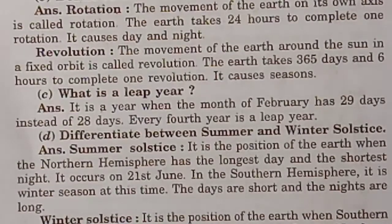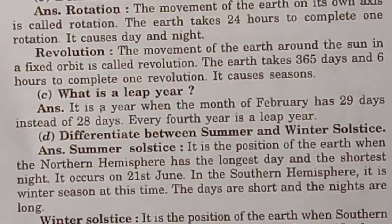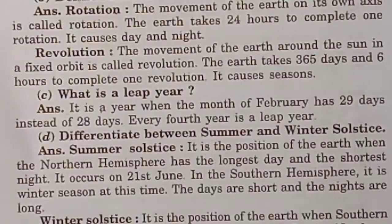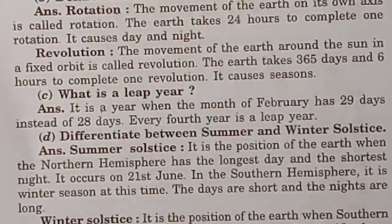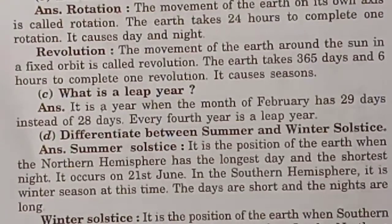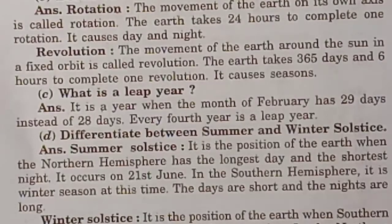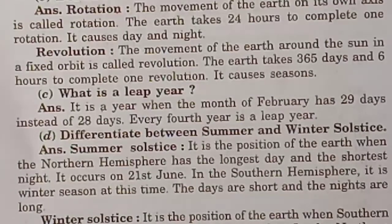Difference between summer solstice and winter solstice. Summer solstice: it is the position of the Earth when the northern hemisphere has the longest day and the shortest night. It occurs on 21st June. In the southern hemisphere, it is winter season at this time — the days are short and the nights are long.